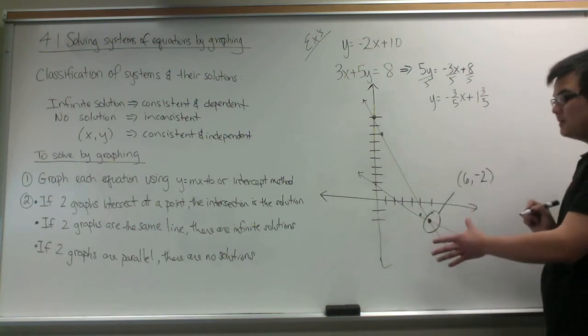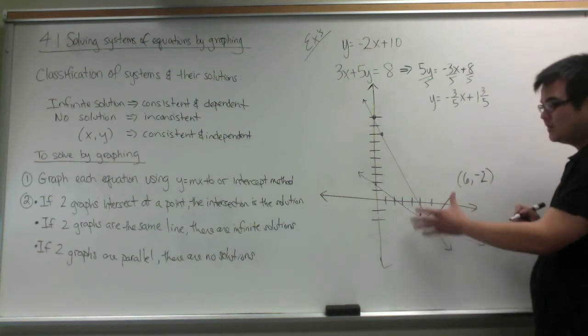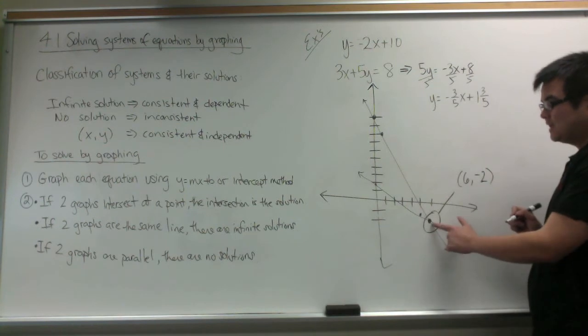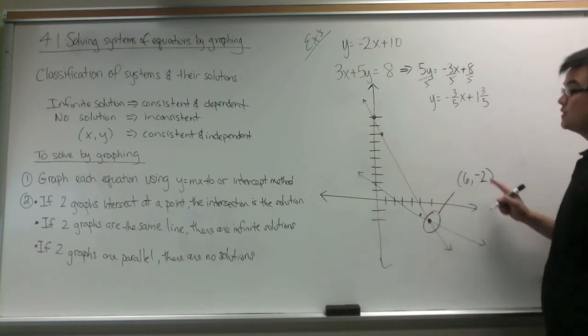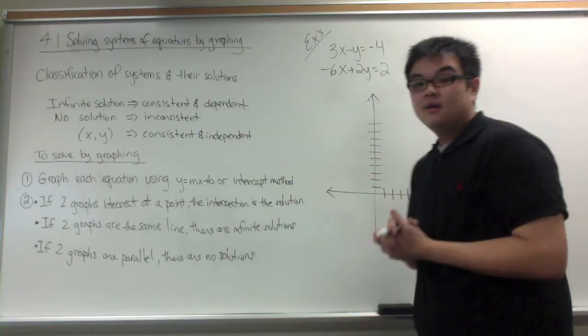You will be able to see it more easily when you use a straight edge and graph paper, so that you can see that (6, -2) is the solution for the system of equations.